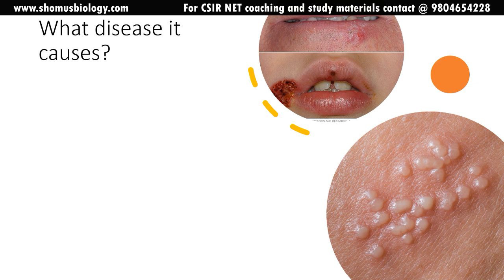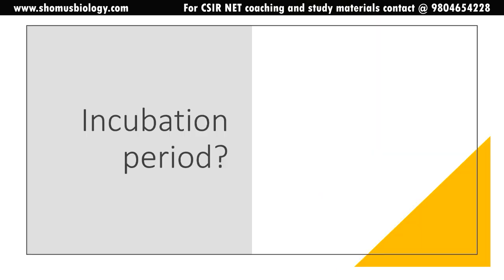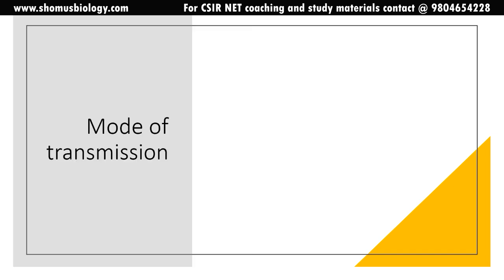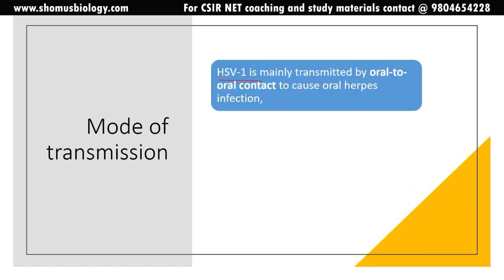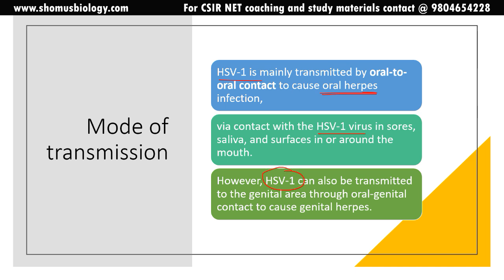There are two sets of diseases: contagious sores most often around the mouth or genitals. The average incubation period is four days, ranging from two to twelve days after exposure. The mode of transmission of HSV-1 is mainly oral-to-oral contact, causing oral herpes or oral sores. HSV-1 can also be transmitted to the genital area through oral-genital contact, making it part of the STD category.